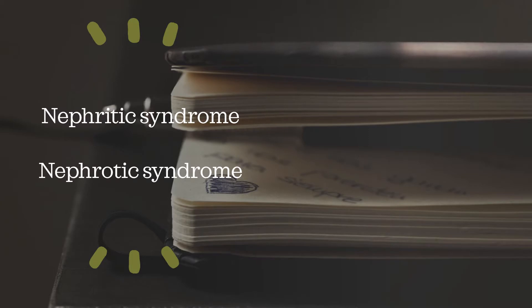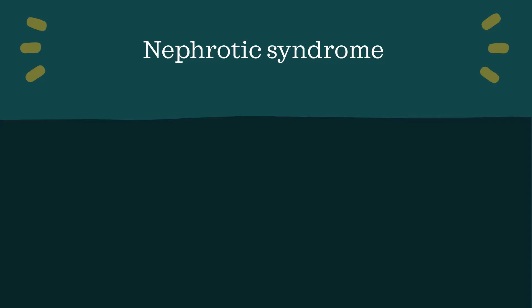Let's look at the difference between these two syndromes. I've highlighted the key difference between these two words, which makes things easier to remember. Nephritic syndrome involves inflammation, whereas nephrotic syndrome involves what I like to think of as round things — like proteins and lipids — and swelling, which occurs very commonly within this condition. I think it's a good idea to start off by looking at them separately.